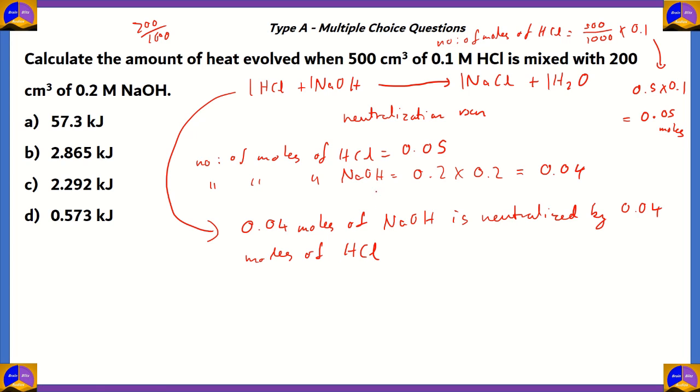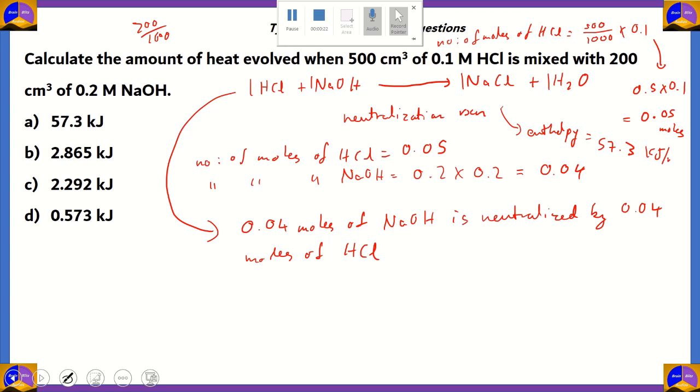So, basically, the limiting reagent is 0.04 moles of NaOH. Now, for the neutralization reaction, especially for the neutralization of HCl and NaOH, the enthalpy of neutralization will be 57.3 kilojoules per mole.